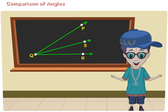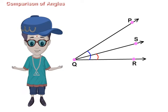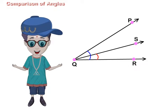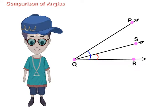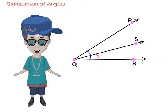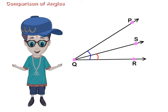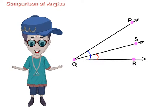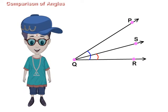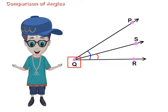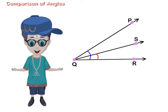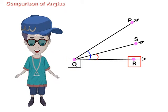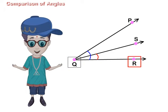Compare the angles PQR and RQS shown on screen. Can you say which of them is greater and which is smaller? Here, Q is the common vertex of the two angles and QR is their common arm.